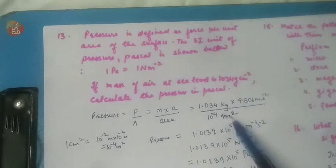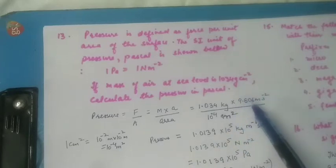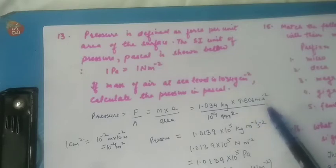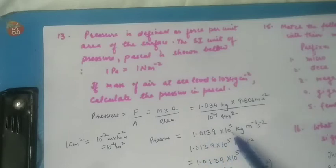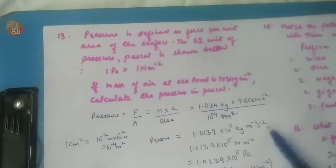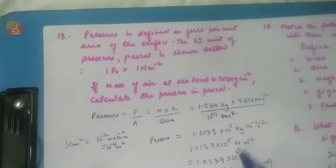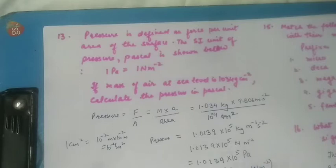Acceleration due to gravity is 9.806 m/s². Multiplying: pressure = 1.034 × 9.806 ÷ 10⁻⁴ = 1.0139×10⁵ kg per meter per second squared. Since these units equal newton per meter square, the pressure in pascals is 1.0139×10⁵ Pa, as one pascal equals one newton per meter square.